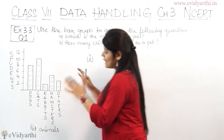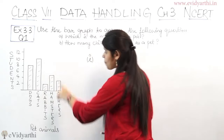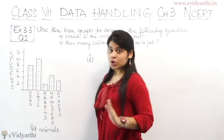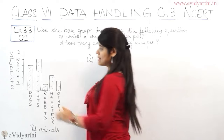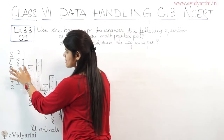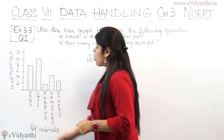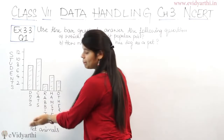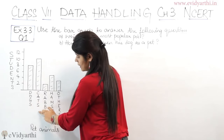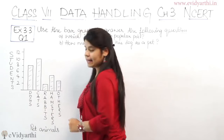Before that, let's first understand ki bar graph ko read kaise karte hai. Bar graph mein, is side pe hamare paas students hai — means these are the students: like 2 students, 4 students, 6, 8, 10, 12 and so on. Aur yaha pe neche is side pe pet animals hai — that is dog, cats, rabbits, hamsters and others.